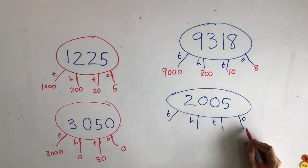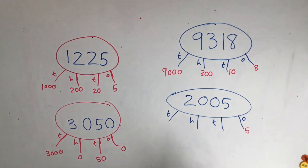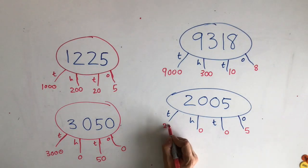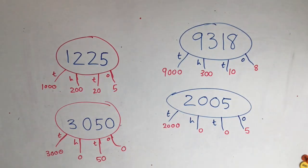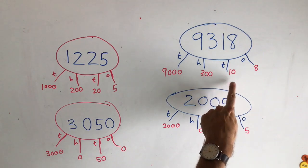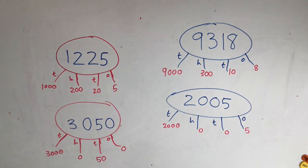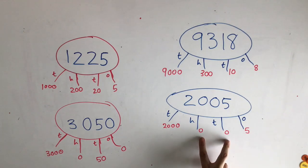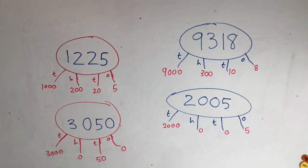On the next one we've got 5 ones. We've got 0 tens and 0 hundreds and you can see we've got 2,000. Let's have a go at reading those two. Here we have 9,318. At the bottom we've just got 2,005. And again remember that we don't say or write down the two numbers that have no value.